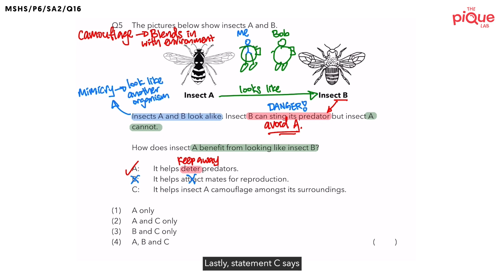Lastly, statement C says that it helps Insect A camouflage amongst its surroundings. Earlier we have discussed that for Insect A to look like Insect B, the concept is mimicry and not camouflage. So let us put a cross here. After looking at all the statements, we see that the only benefit for Insect A to look like Insect B is statement A, which gives us our correct answer to be number 1, A only.